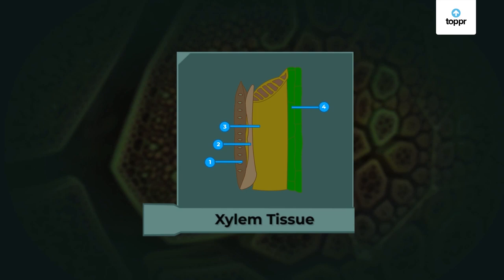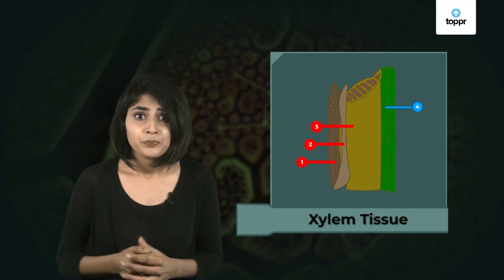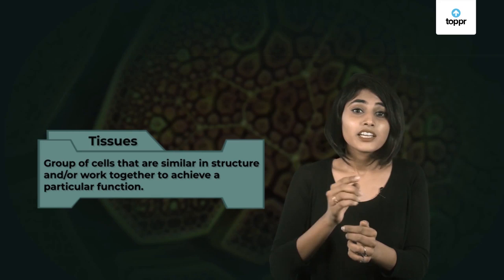Since all four cell types in xylem work towards a common function — the transport of water — they form a tissue. What's more interesting is that three out of the four cell types are dead. So it really doesn't matter if cells in a tissue look similar or are even alive, as long as a group of cells work towards a common function, we call it a tissue. Even though we commonly define tissue as a group of cells similar in structure and/or working together to achieve a particular function, the most important thing is that all cells work together to achieve a common function.